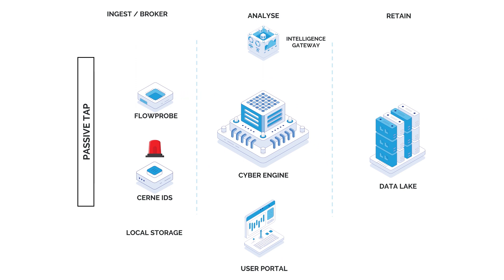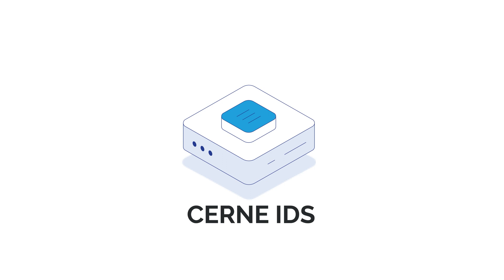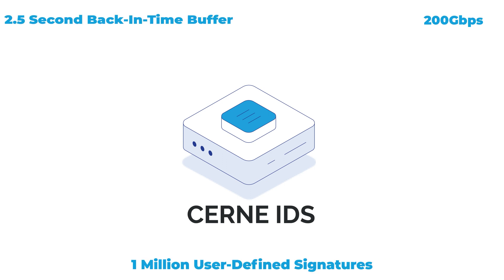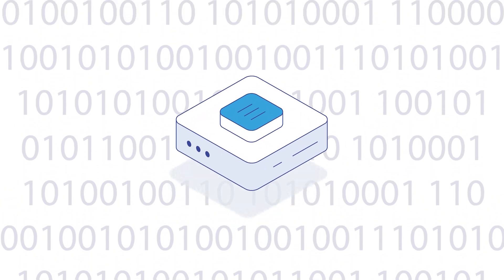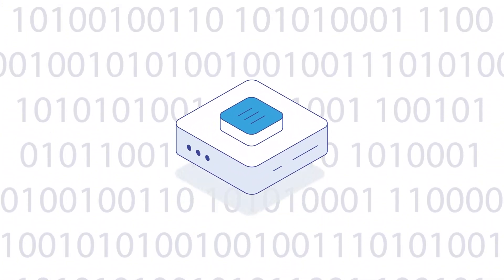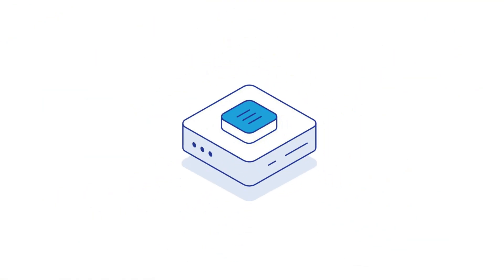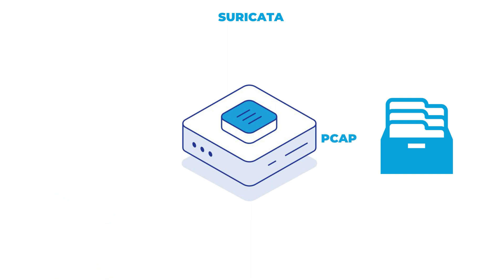Telesoft CERN is a 200 gigabit per second intrusion detection system which monitors and analyzes network traffic in real time, performing line rate signature matching to alert the user to malicious or suspicious network activity. Based on Suricata, with Telesoft's specific modifications and hardware hooks for accelerated performance, the CERN is optimized to identify, alert, and record signature matched traffic to PCAP.